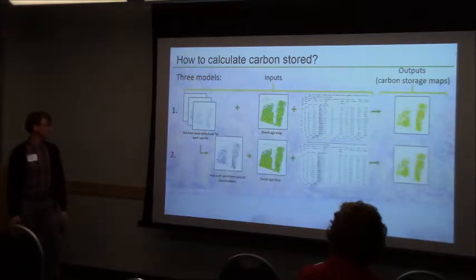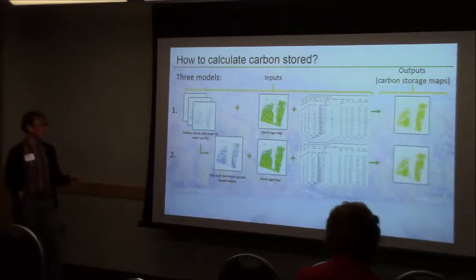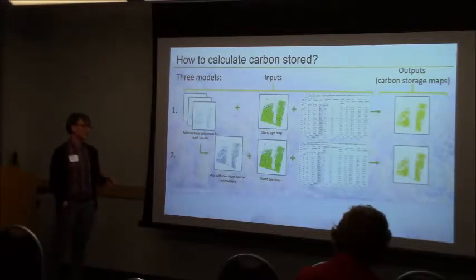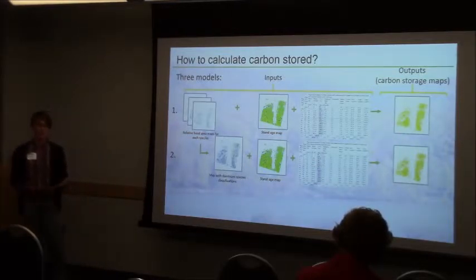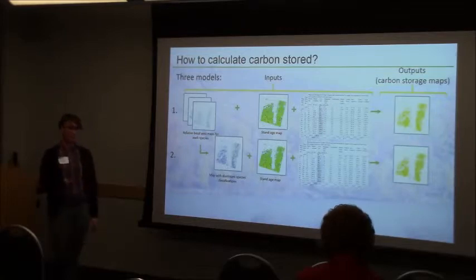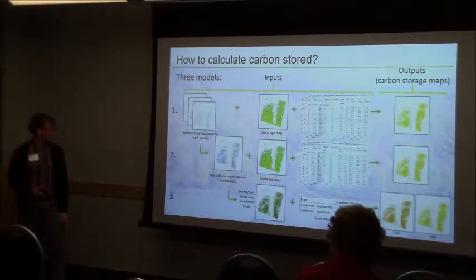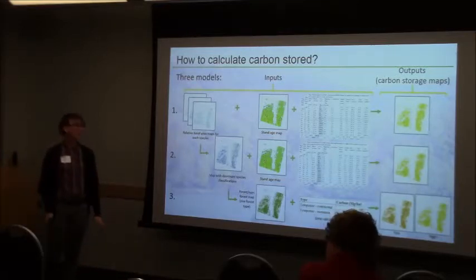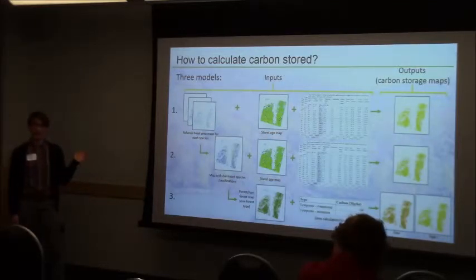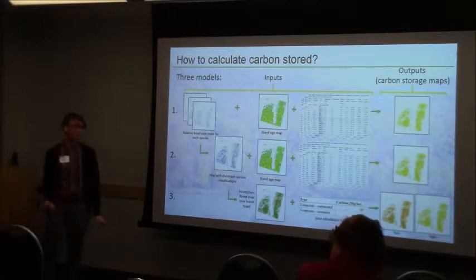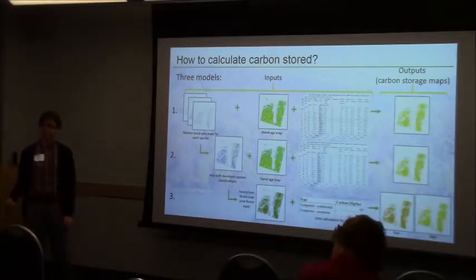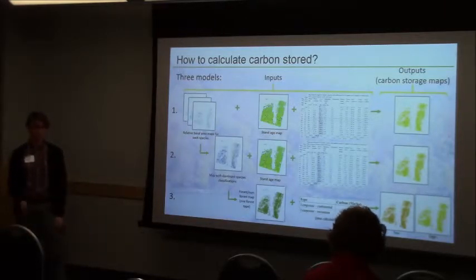That's the first model. The second model tries to get a middle ground between coarse classifications and using relative basal area. Based on those relative basal area maps, I assigned a dominant species to each pixel — simply whichever species has the most basal area in that pixel. I used the same stand age map and carbon tables to assign a carbon value to each pixel. The last model was just a forest/non-forest map using IPCC carbon values. There are two IPCC values relevant to Vermont: temperate forest continental and temperate forest mountain, so I ran it for both to get a low and high bound.